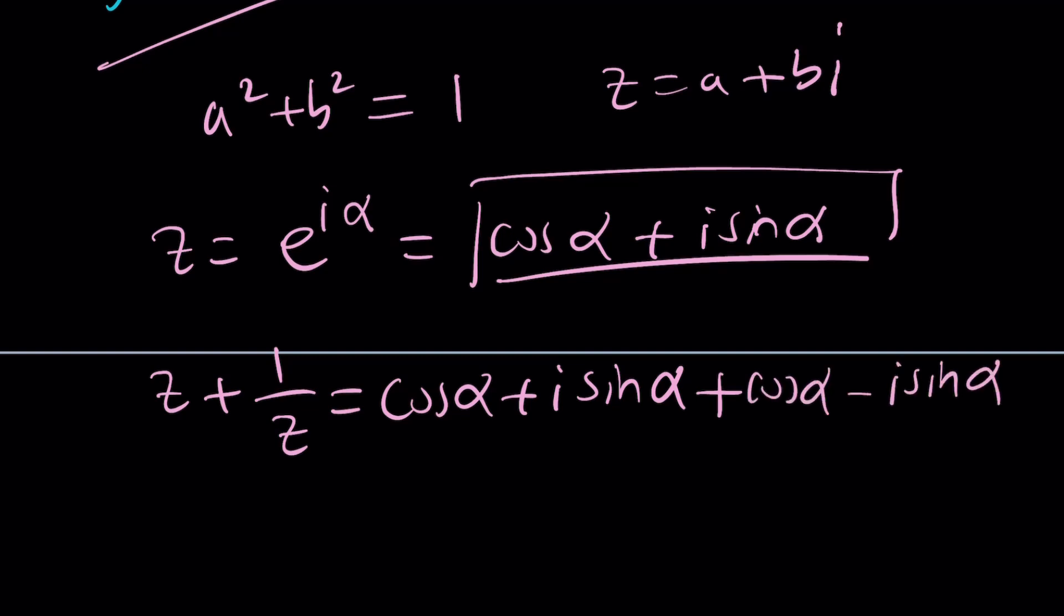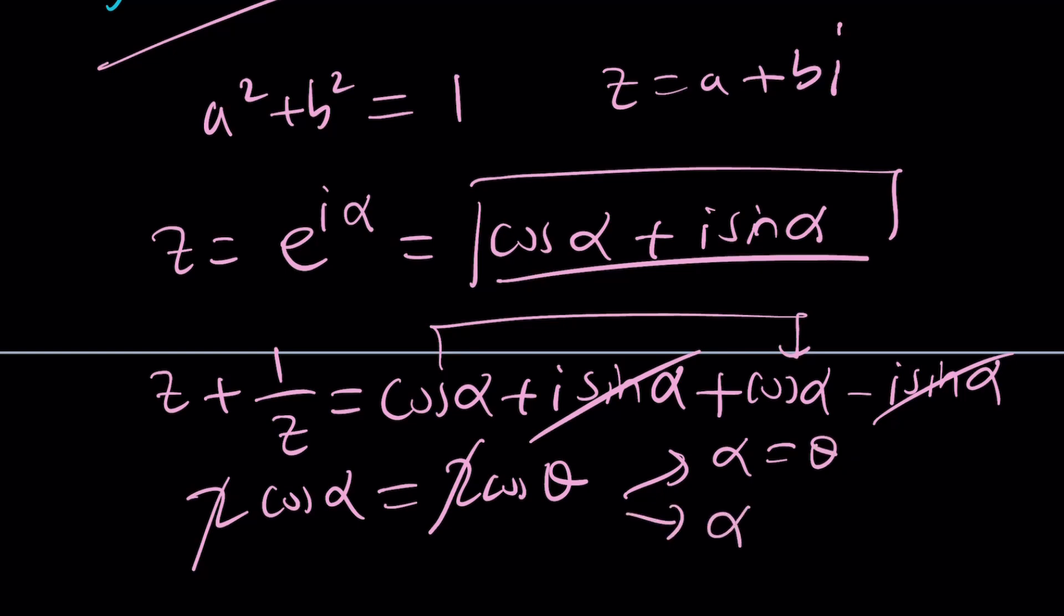Imaginary parts cancel out. We get two cosine alpha. But that's supposed to be two cosine theta, which means alpha is theta. Of course, it's not the only result. We'll talk about it. But this tells you that either alpha is theta or alpha is the opposite of theta. Or you can also write it as two pi minus theta, same idea. And we get the same solutions.